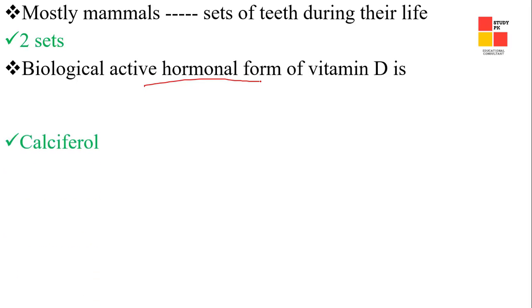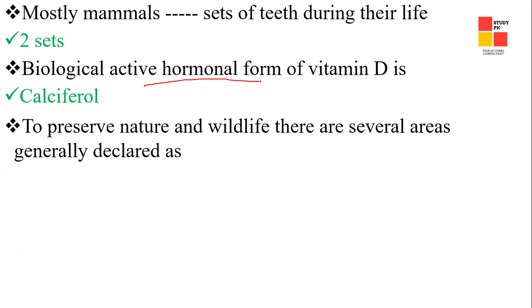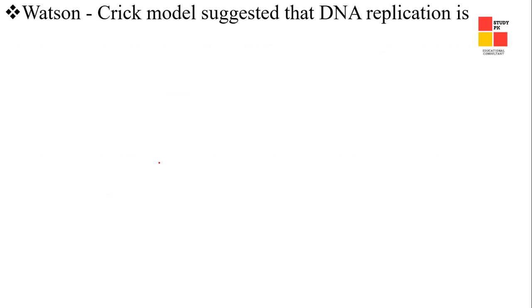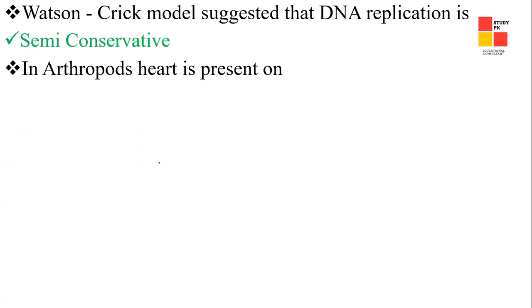Next one: the biologically active hormonal form of vitamin D is calcitriol. Next one: to preserve nature and wildlife, several areas are declared as game reserves. Next one: which of the following is a scaleless fish? The right answer is catfish.